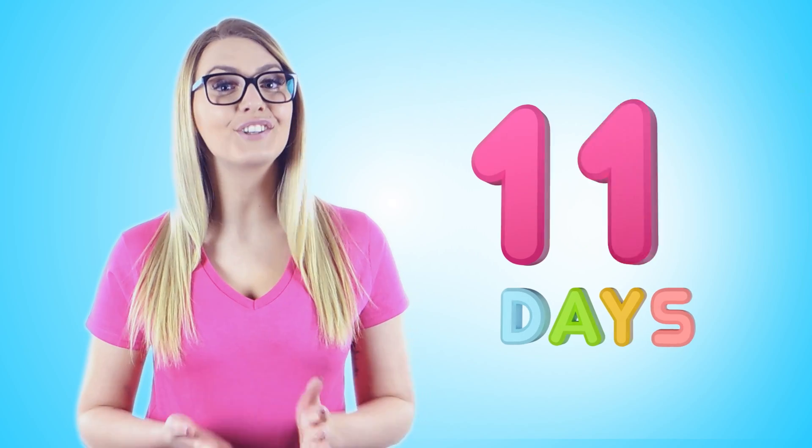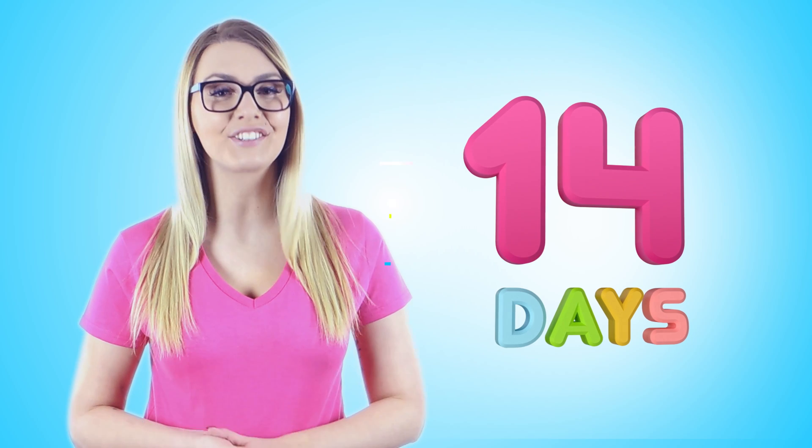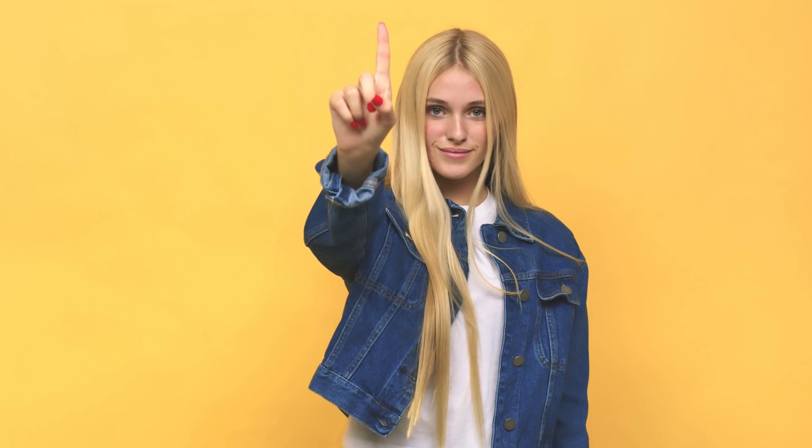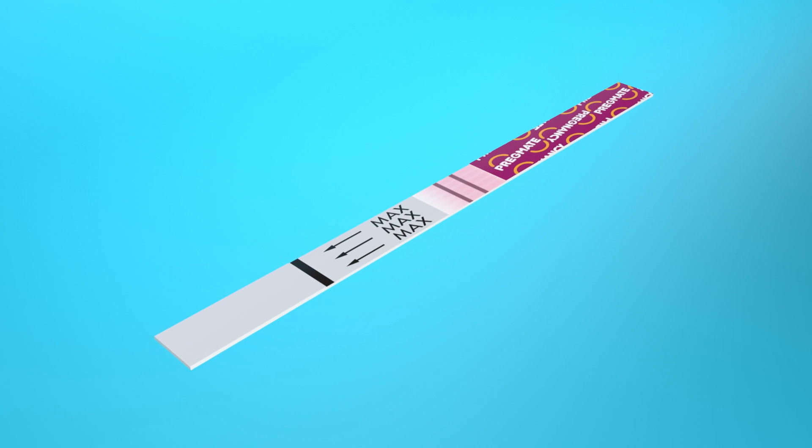With Pregmate home pregnancy tests, you may be able to test positive as early as 10 to 14 days past ovulation. Waiting at least one day after your missed period will give you the most accurate result.